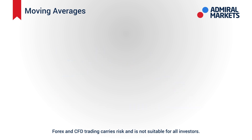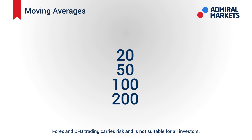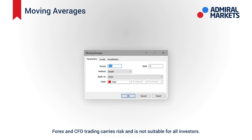Common values of moving average time periods in days are 20, 50, 100, and 200. On the MetaTrader trading platform, go to the indicator settings. You can adjust the period of the indicator, and if you apply the indicator to the daily chart and select 100 periods, you will have the average of those previous 100 days.